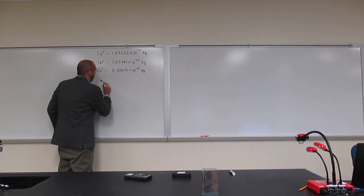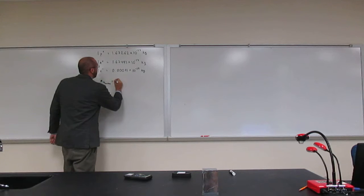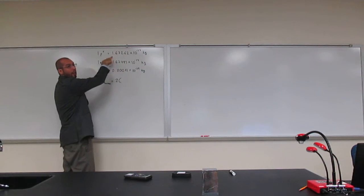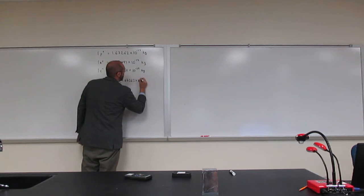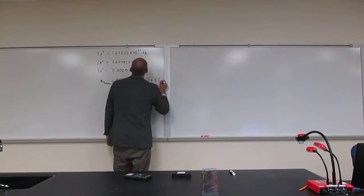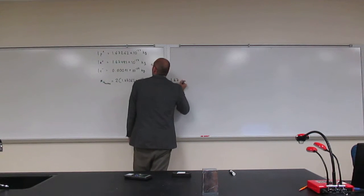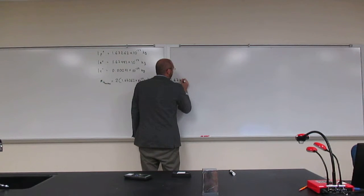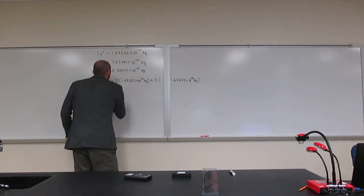Well, the mass of the helium nucleus is going to be two times this number, because that's one proton, so 1.67262 times 10 to the negative 27 kilograms, and then add that to two times the mass of a neutron, right? Because you have two protons and two neutrons, so 1.67493 times 10 to the negative 27 kilograms.